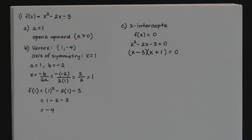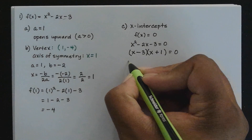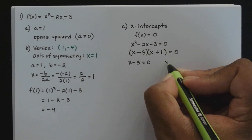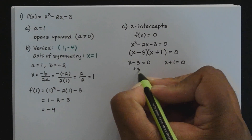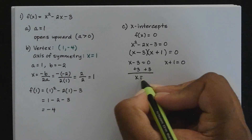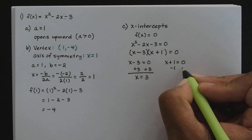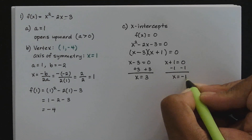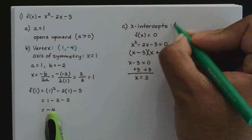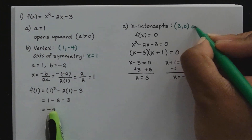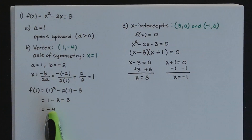We'll set each binomial factor equal to 0 and solve. So x minus 3 equals 0, and x plus 1 equals 0. For x minus 3 equal to 0, adding 3 gives x equals 3. For x plus 1 equal to 0, subtracting 1 gives x equals negative 1. So these are my two x-intercepts: the ordered pair (3, 0) and the ordered pair (negative 1, 0). Those are the points where the graph of the parabola crosses the x-axis. That's part C.